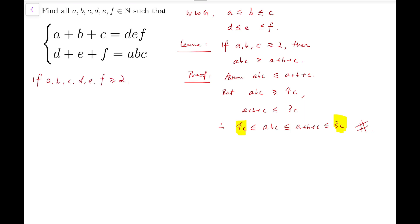So firstly, abc, according to the lemma, will be greater than a plus b plus c. Product is greatly greater than the sum. And then this sum will be equal to product of another three numbers, def. And then this product, again, is greatly greater than d plus e plus f.